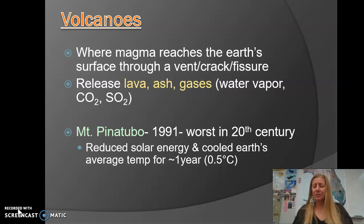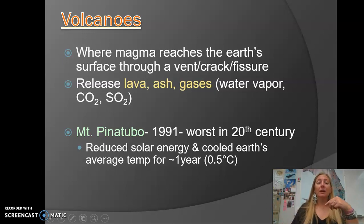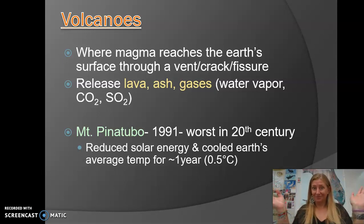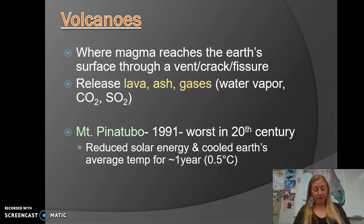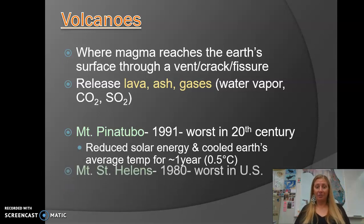Just a couple of examples — you don't need to know details here. When Mount Pinatubo erupted in 1991, so much ash was released up into the atmosphere that it actually caused what we refer to as a nuclear winter. Not caused by nuclear war, but there was so much ash in the atmosphere that it reduced the amount of sunlight reaching earth's surface and cooled earth's temperature. 0.5 degrees Celsius is pretty significant when you're talking about a fast change like that, so obviously a lot of ash was released.